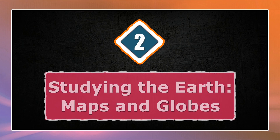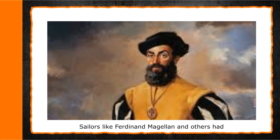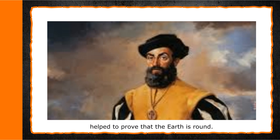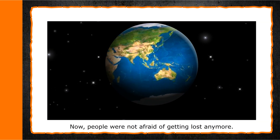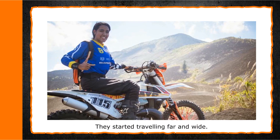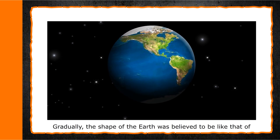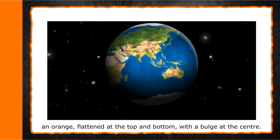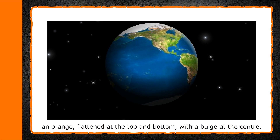Chapter 2: Studying the Earth — Maps and Globes. Sailors like Ferdinand Magellan and others had helped to prove that the earth is round. Now people were not afraid of getting lost anymore and they started travelling far and wide. Gradually, the shape of the earth was believed to be like that of an orange, flattened at the top and bottom with a bulge at the centre.